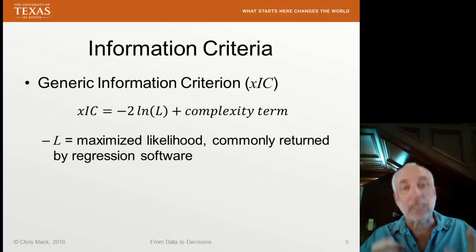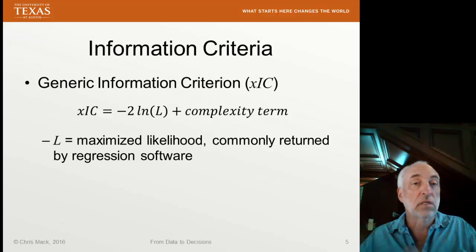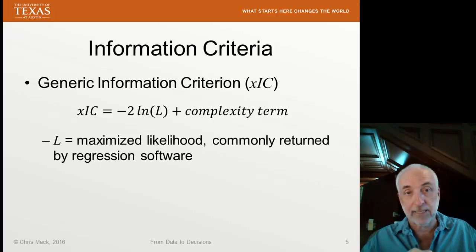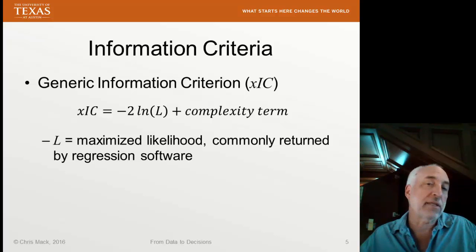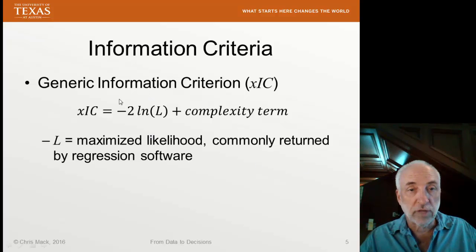First of all, L is called the likelihood. We've talked about this before. We often use maximum likelihood methods to establish what the best fit parameters are. And L is the probability that I will get this data set, given the set of parameters that I have. We adjust the parameters to maximize that likelihood. Regression software very commonly calculates this and can return this quantity after doing a regression. The best fit maximized value of the likelihood. Then, of course, if we know what L is from the regression, we can take the log of it and multiply by 2 very easily. And then we need to add a complexity term.